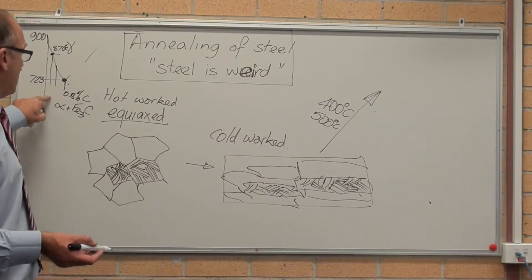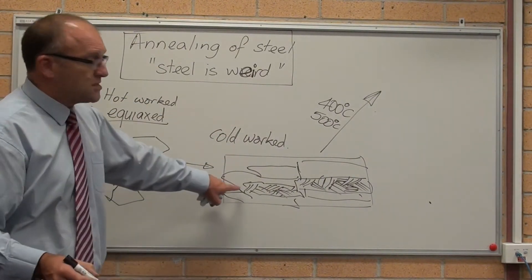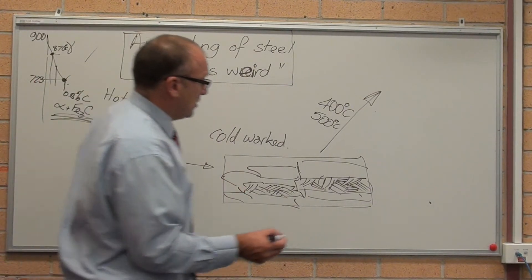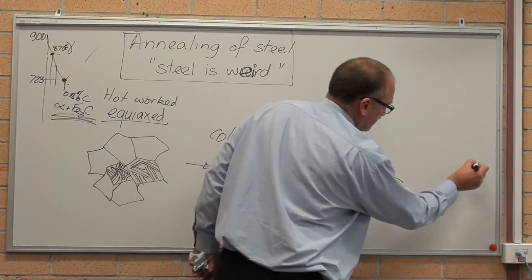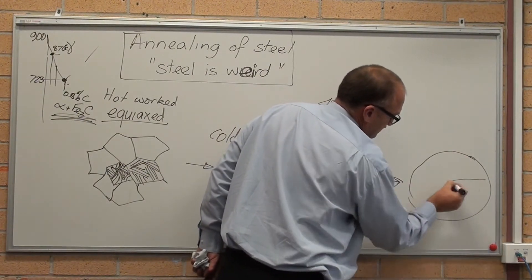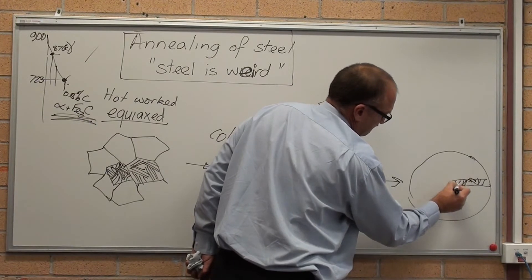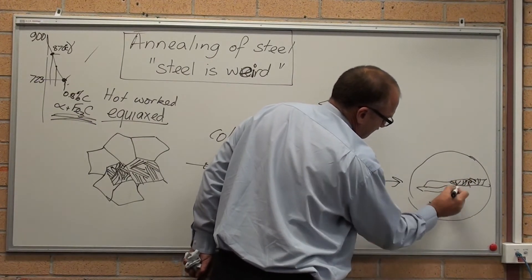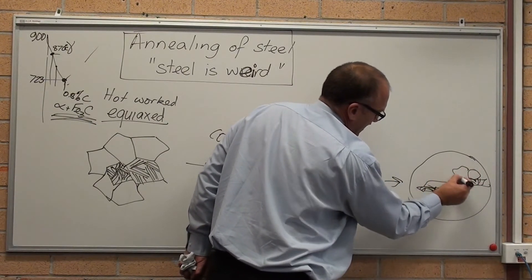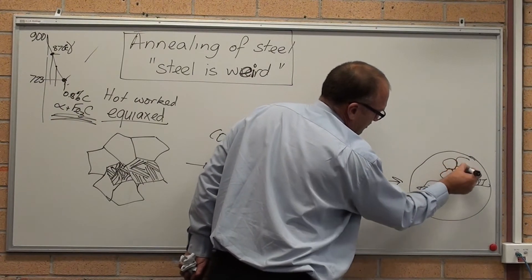So you need 870 degrees to redissolve the carbon, but we're only heating it up to 400 to 500 degrees centigrade — down here in the two-phase field. So the perlite still stays as perlite. All that happens is, around it, we're getting recovery and recrystallisation.